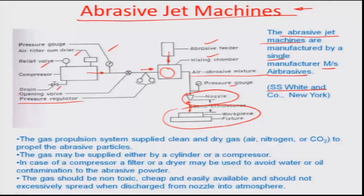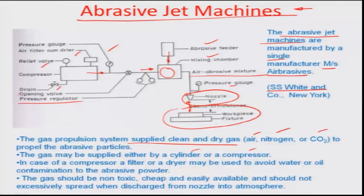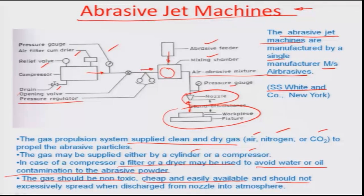The abrasive filter hops abrasive grains into the ambient air, and the air-abrasive mixture is passed through the nozzle. A pressure gauge near the nozzle monitors the pressure being injected onto the workpiece. Most AJM machines are manufactured by a single manufacturer called Air Abrasives from SS White Company, New York. The gas propulsion system supplies clean, dry gas — typically air, nitrogen, or CO2 — either from a cylinder or compressor. A compressor is preferred for repeated use, along with a filter and dryer to avoid water or oil contamination. The gas should be non-toxic, cheap, and easily available.